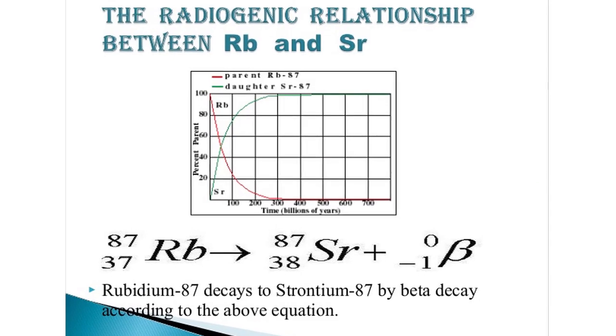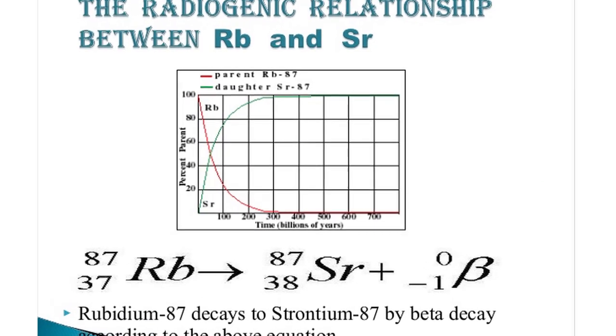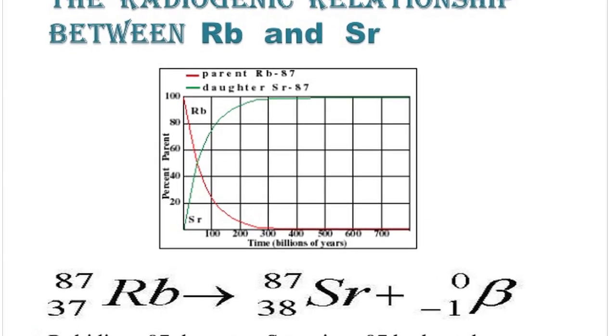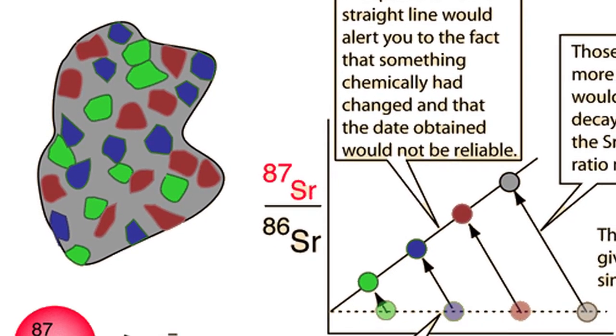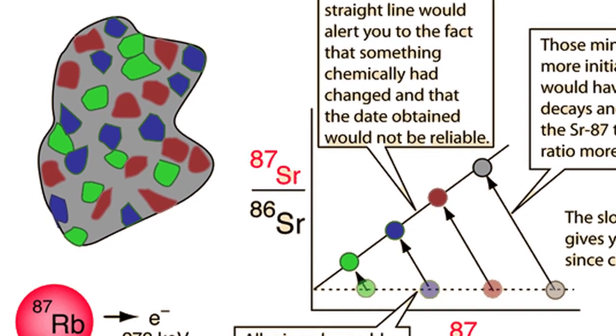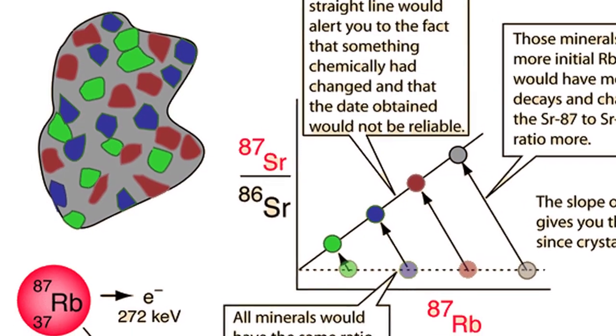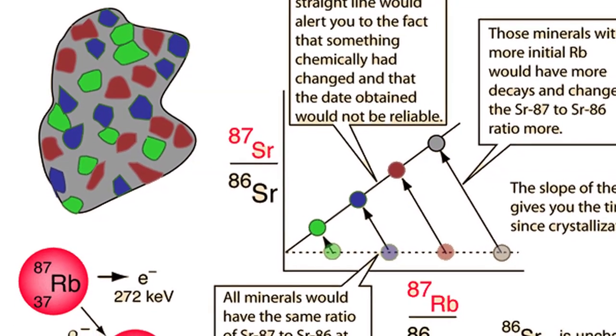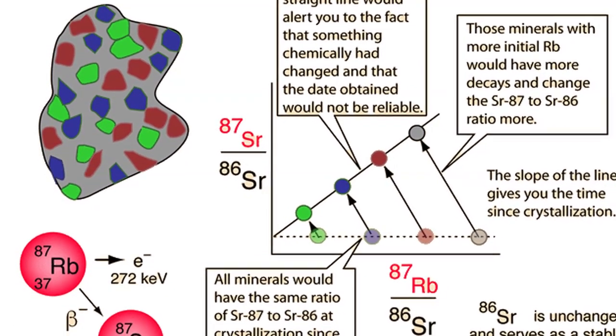Wherever we find ratios of rubidium-87 and strontium-87, we also find amounts of strontium-86 and other stable isotopes in the rubidium-87 decay chain. These stable isotopes also allow us to calibrate and correct for any strontium-87 that would have been there initially.